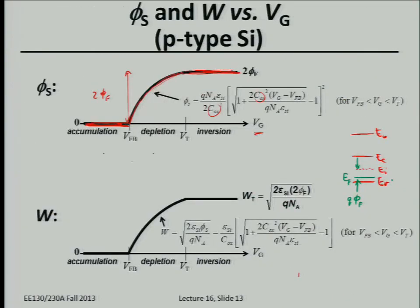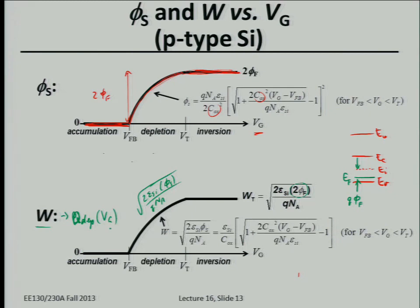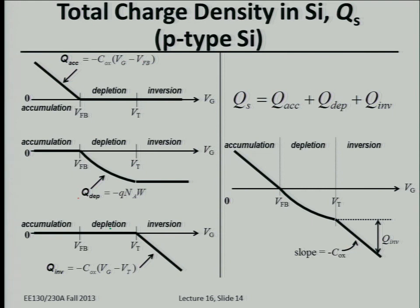The depletion width is the square root of (2ε_silicon × φs), and φs reaches a maximum of 2φF at threshold. Why do we care about the depletion width? It gives us Q_depletion — if we know the width of the depletion region as a function of gate voltage, we can calculate Q_depletion as a function of gate voltage.